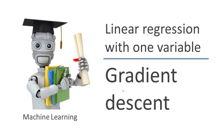We previously defined the cost function J. In this video, I want to tell you about an algorithm called gradient descent for minimizing the cost function J. It turns out gradient descent is a more general algorithm and is used not only in linear regression — it's actually used all over the place in machine learning. And later in the class, we'll use gradient descent to minimize other functions as well, not just the cost function J for linear regression.